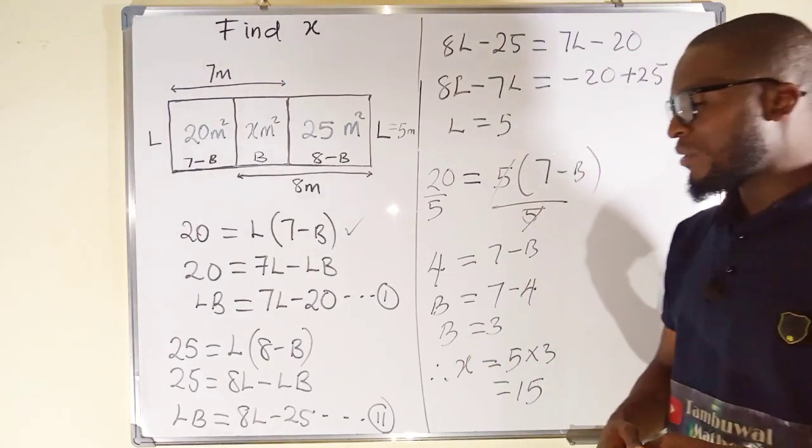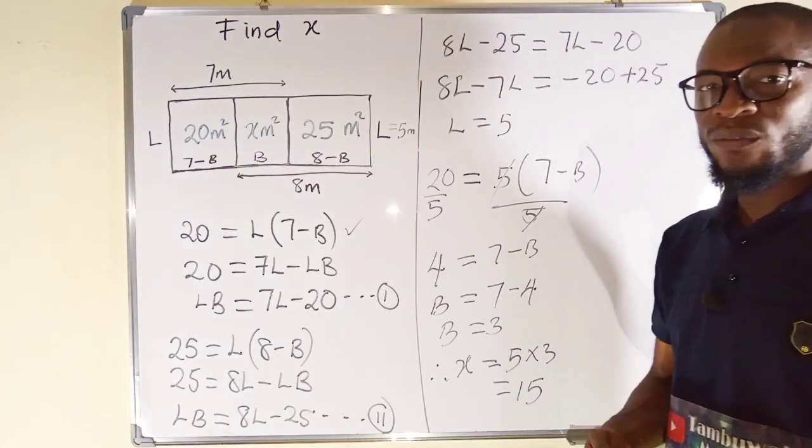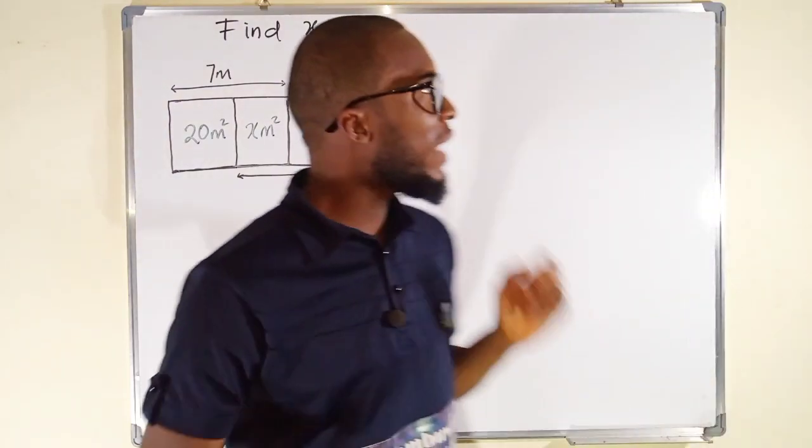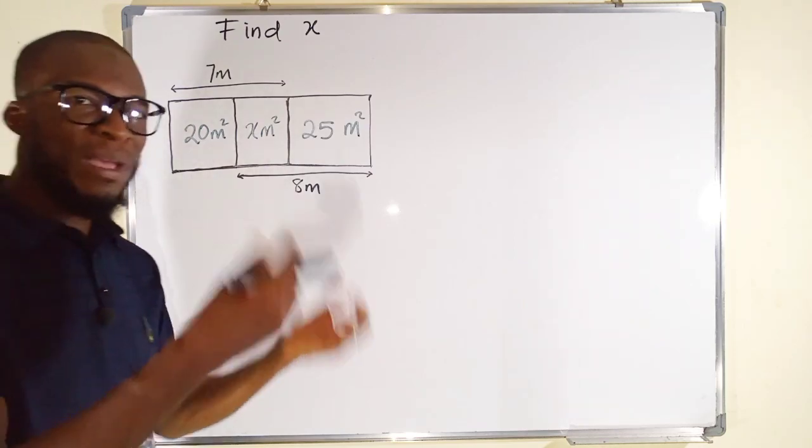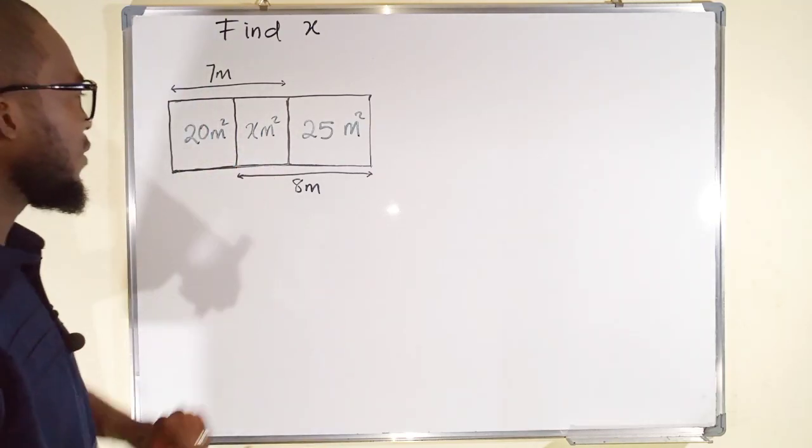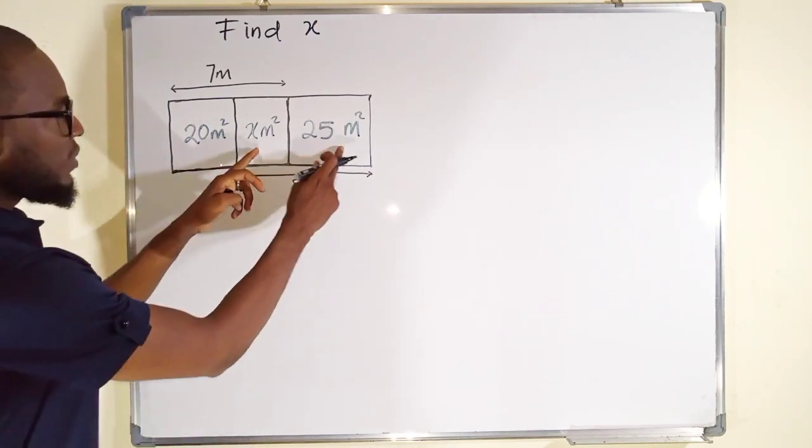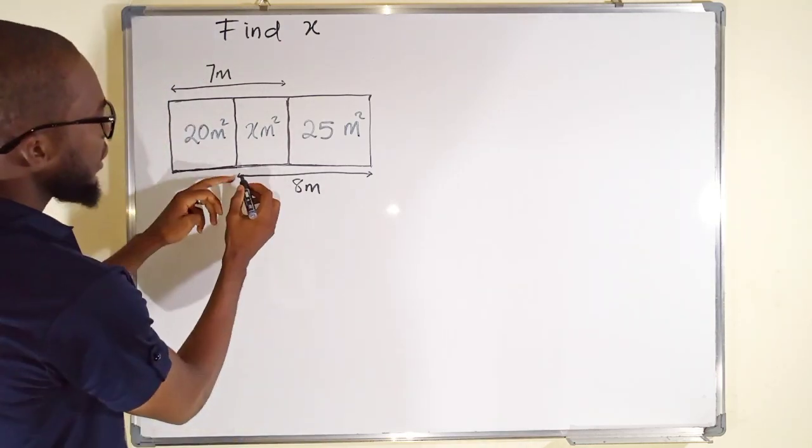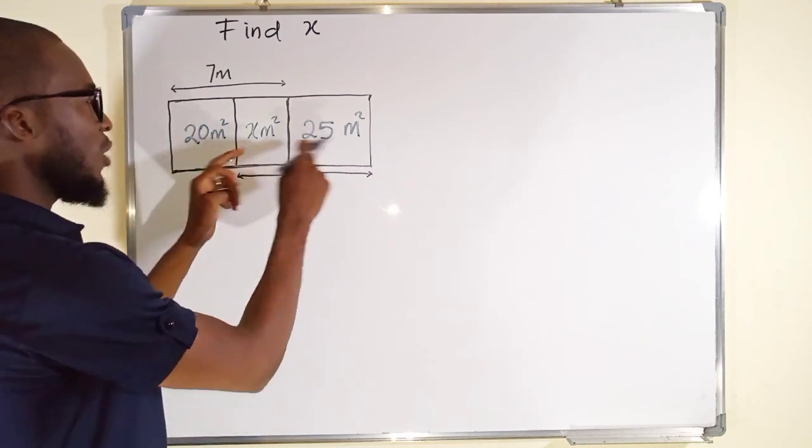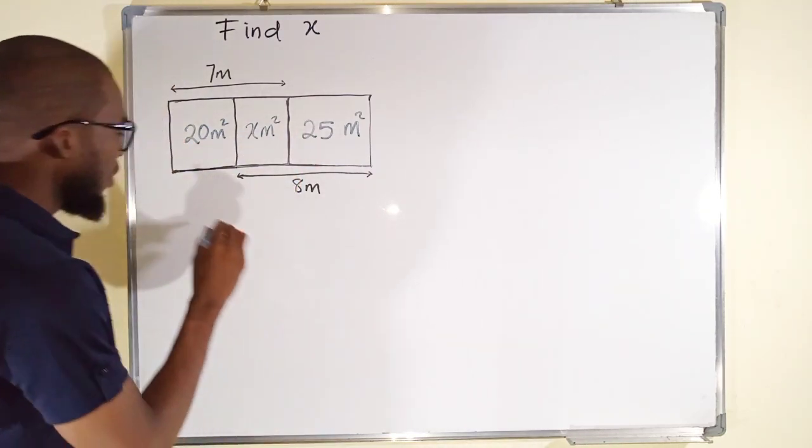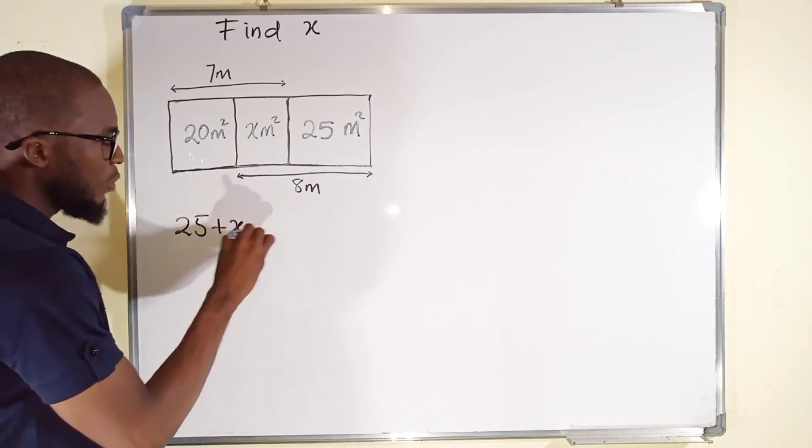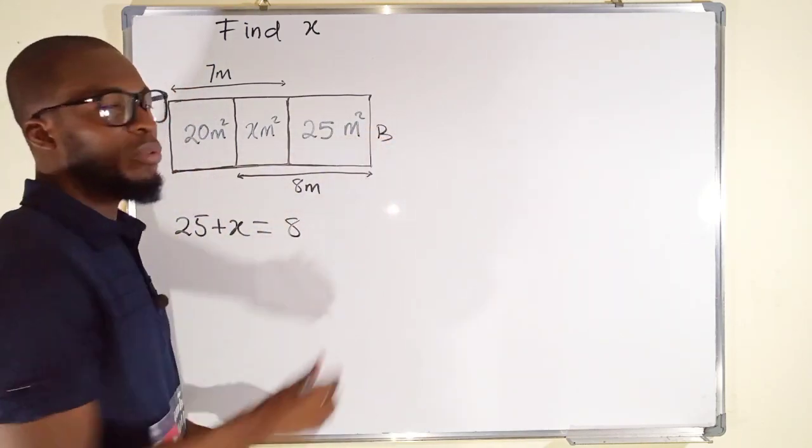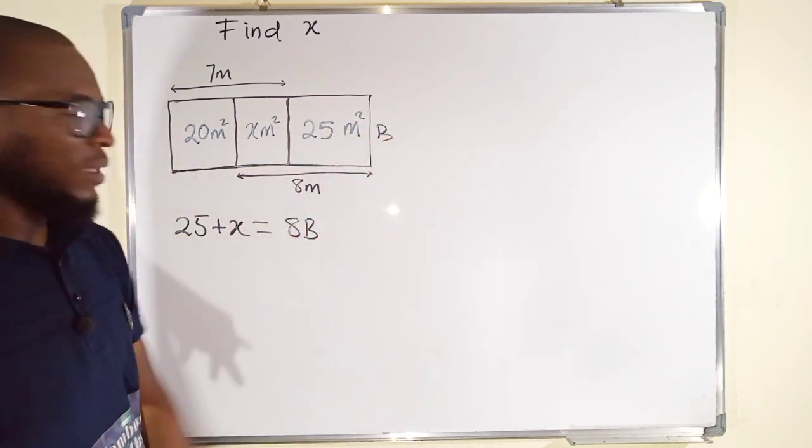So, now let us look on to the second method which I think is the simplest way to solve this problem. We can find X directly without finding the two dimensions. Only a single dimension is enough for us to find this value of X. Consider this area and this area joined together. We have 25 plus X and the formula remains the same because the total length from this side to this side is 8 meters. So, we can consider these two quadrilateral having the same length. So, 25 plus X will be equal to length times breadth. Again, the length is 8. The breadth, I can call this one the breadth. 8B because 8 times B is 8B.